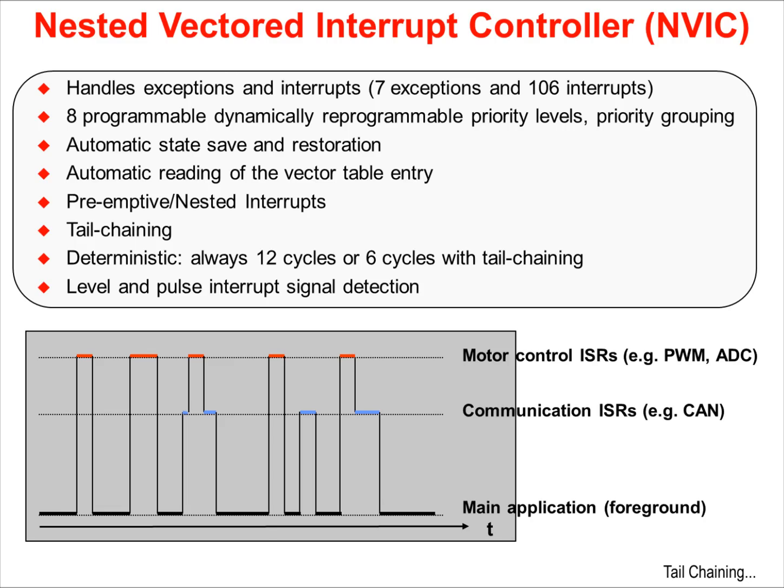But sometimes you need to nest interrupts. For instance, you need to get very quickly to a low latency motor control device. You need to get to it quickly and you have other interrupts that take too long — those long interrupt service routines will need to be interruptible. On most microcontrollers, you'll have to program this tedious process in software. On the Teva C-series devices, you can do it by programming the NVIC hardware. You can make interrupts pre-emptive and you can nest them.